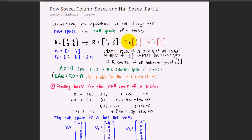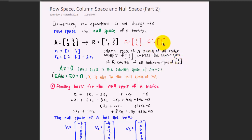But this is not the case for the column space. The column space of matrix A consists of all scalar multiples of [1, 2], whereas the first column of R, the reduced row echelon form, is [1, 0]. So the column space of R consists of all scalar multiples of [1, 0]. No matter how you multiply this, the second entry will always be 0, which will not give you back the column vectors of A.